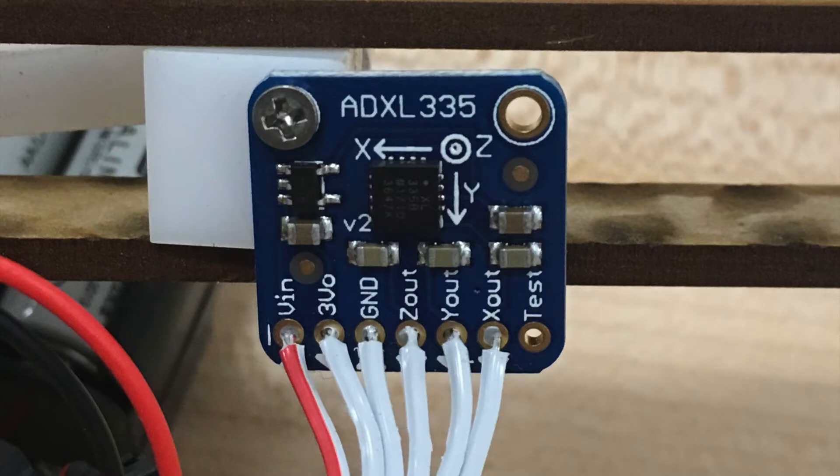The accelerometer used for this project is an Adafruit ADXL-335. One thing that is important to note is the axes and general orientation of the accelerometer, since these impact the data taken.